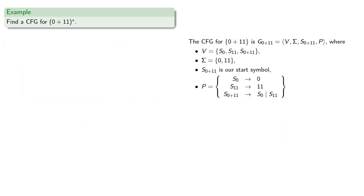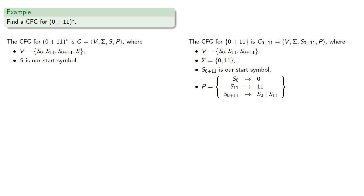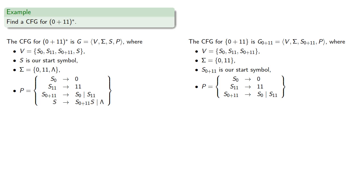And finally, the context-free grammar for the star closure of our language is going to have variables — all of them plus a new start symbol — we'll have a new start symbol, our terminal symbols will be all of them plus, if we haven't already included it, the empty string, and our production rules — all of them — plus an extra production rule that takes us from the new start symbol to the start symbol followed by the start symbol, and possibly including the empty string.